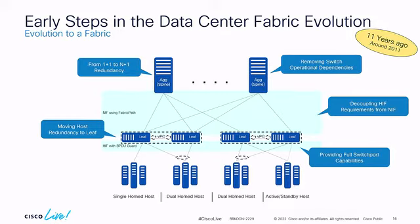Conceptually, what had been at the parent level moved down to the leaf level — now individually operating switches running VPC together with everything dual-attached, still running Fabric Path. You start to see the beginnings of a VXLAN or leaf-spine type design, albeit with Fabric Path as the encapsulation in the core layer.